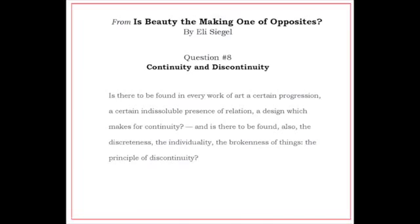In 'Is Beauty the Making One of Opposites' of 1955, Mr. Siegel explains what Darwin described in his 1859 Origin of Species and 1870 Descent of Man. Mr. Siegel asks in Question 8, titled Continuity and Discontinuity: 'Is there to be found in every work of art a certain progression, a certain indissoluble presence of relation, a design which makes for continuity, and is there to be found also the discreteness, the individuality, the brokenness of things, the principle of discontinuity?' The theory of evolution is a oneness of continuity and discontinuity in the very terms that Eli Siegel uses.